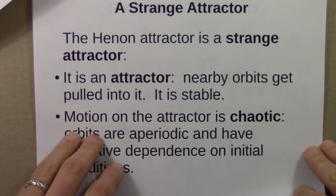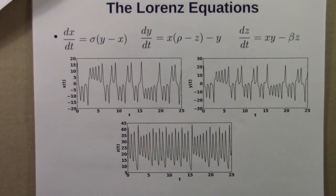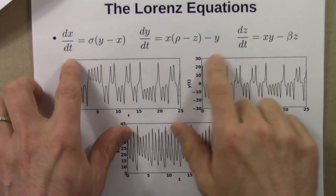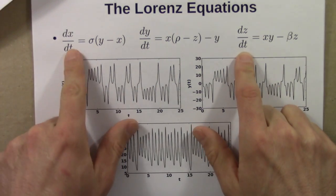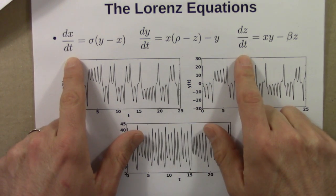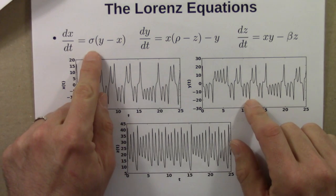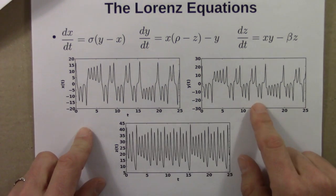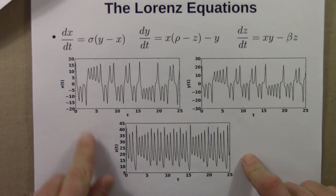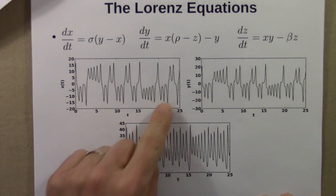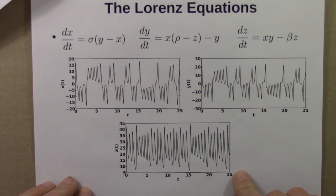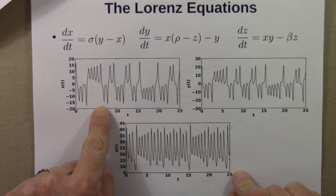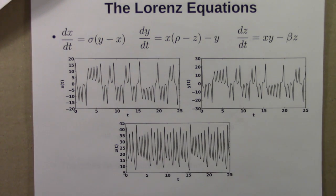That was the Henon map. Then we did another example: the Lorenz equations. This is a system of three differential equations — a dynamical system — specifying how x, y, and z change over time in terms of derivatives, or rates of change. There are three parameters: sigma, rho, and beta. If we fix those at particular values, we can solve for x, y, and z using a computer. Here is one example: we see aperiodic cycling in all three variables, with some time regularity, but the amplitude of the wiggles and whether they're up or down varies seemingly at random.